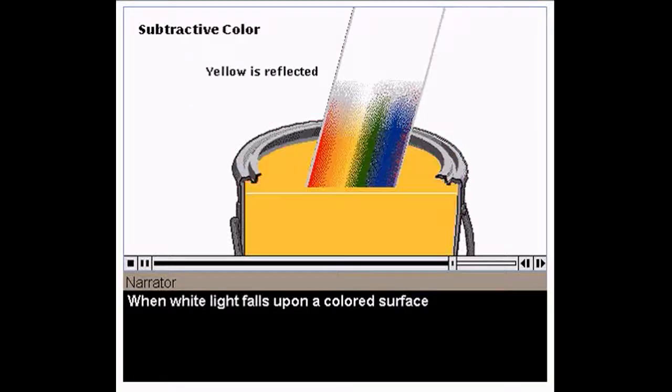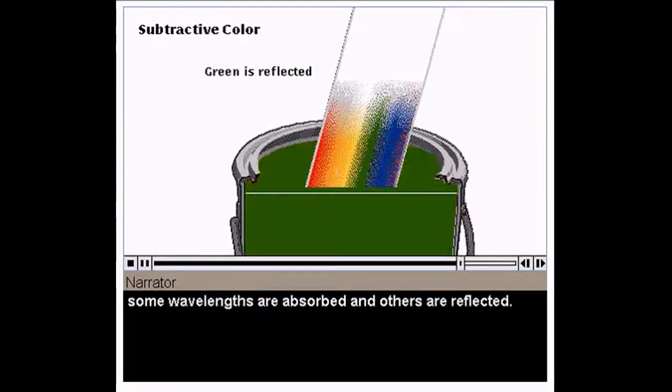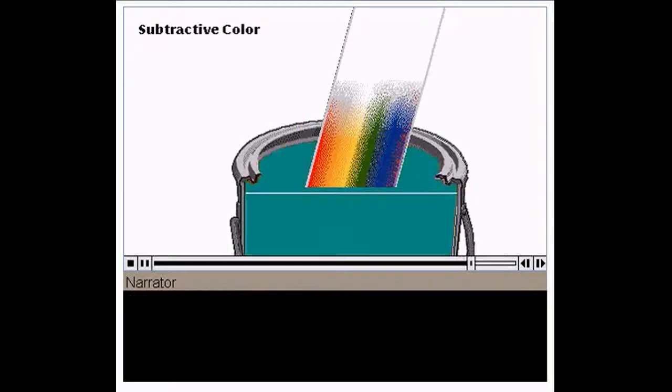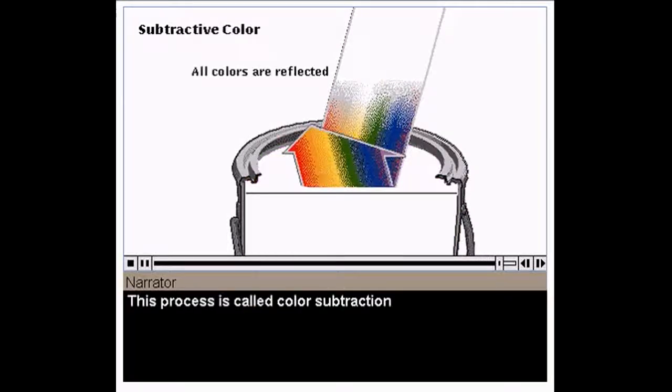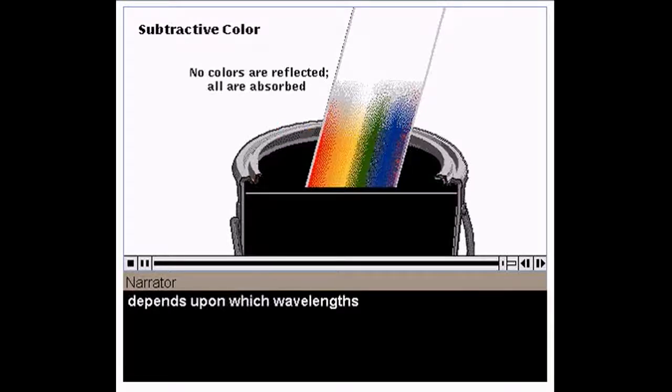When white light falls upon a colored surface, some wavelengths are absorbed and others are reflected. We interpret the color of the surface according to which wavelengths of light remain. This process is called color subtraction because the color we see depends upon which wavelengths have been subtracted from the color.